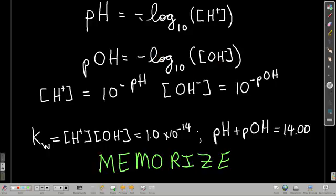The inverse of these functions is 10 to the power. So if we solve this for just the concentration of hydrogen ion, we get 10 to the minus pH. And the same thing for hydroxide ion with pOH. Memorize all this stuff. This is very useful. Use it all the time in the acid-base stuff.